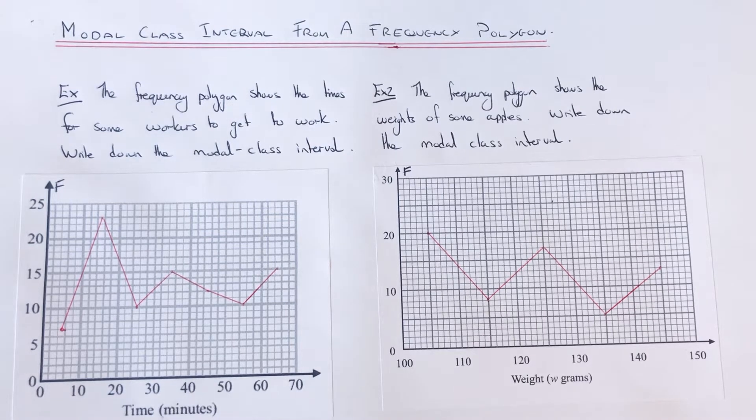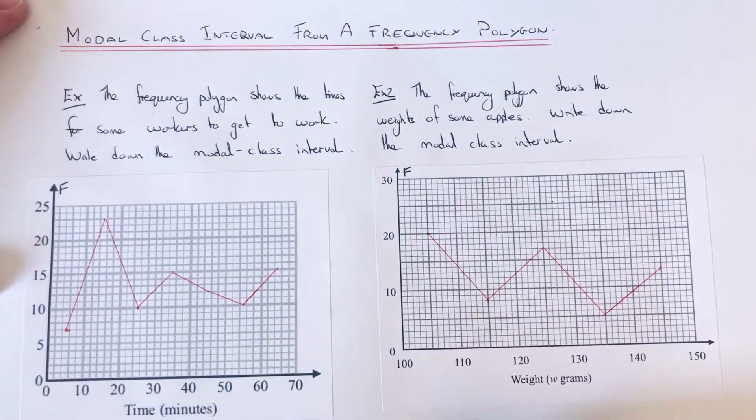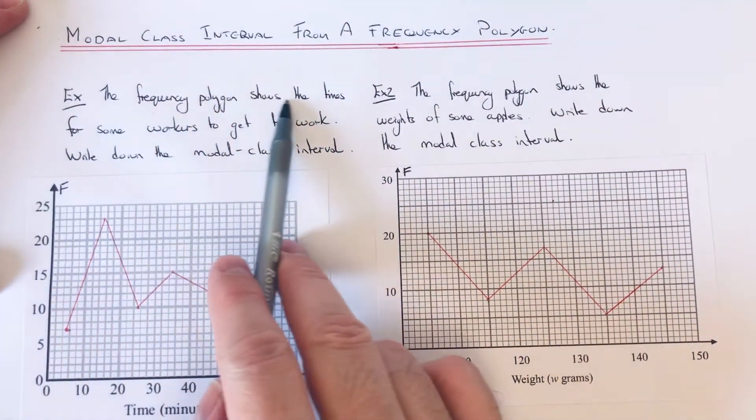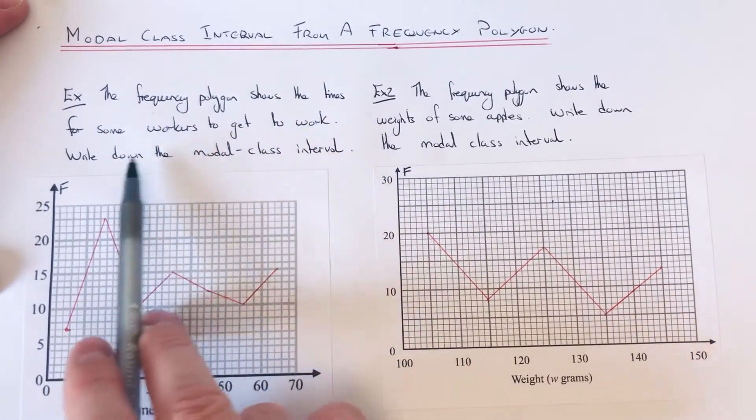That's the highest point on our frequency polygon. Let's have a look at the two examples which we have. The frequency polygon shows the times for some workers to get to work, so we've got to write down the modal class interval.